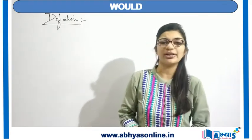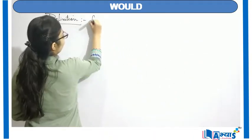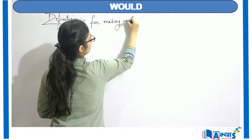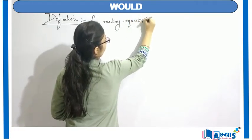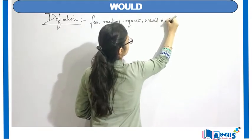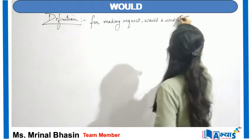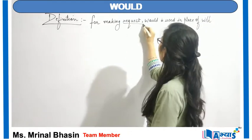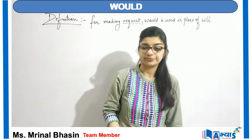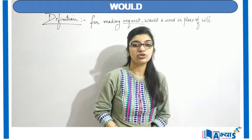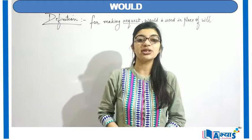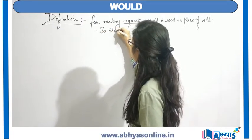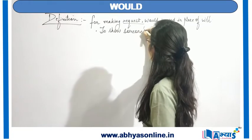So what will be the definition? 'Would' is used in place of 'will' for making requests. Would is basically used for making requests, and would is also used to indicate or to show someone's wishes. So the two main usages of 'would' are: making requests and showing someone's wishes.